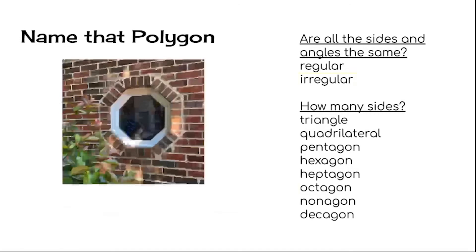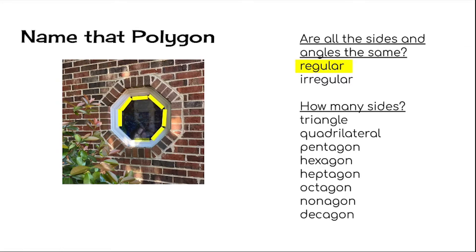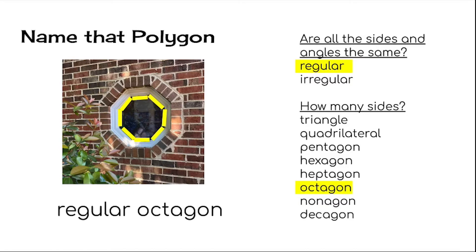How about some pictures from my walk? I saw this window — can you name this polygon? First, ask yourself: are all the sides and angles the same? They are — it's a regular polygon. And how many sides are there? Count along while I mark them. There are eight of them. What do we call an eight-sided figure? That's right — it's an octagon. This window is a regular octagon.